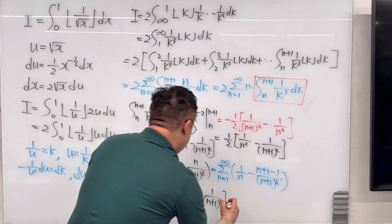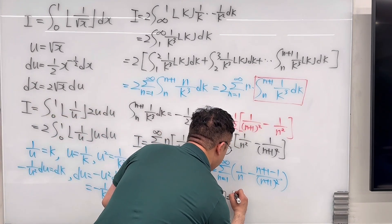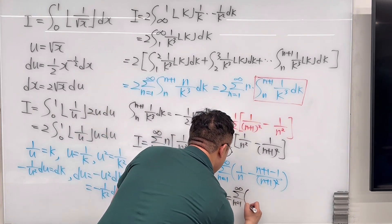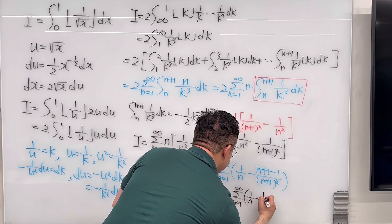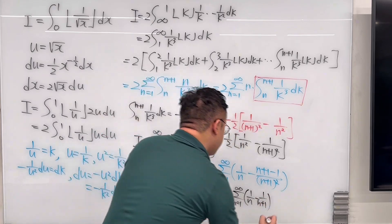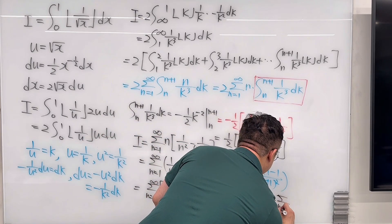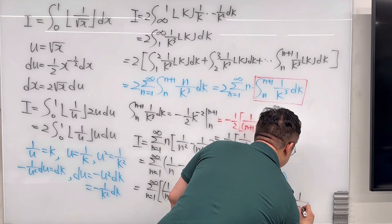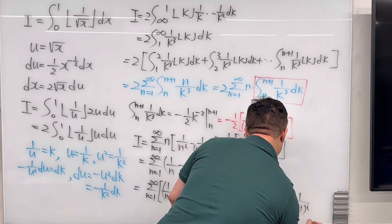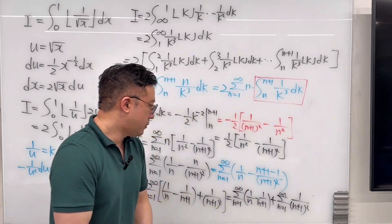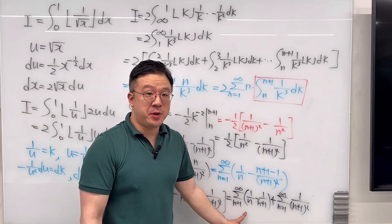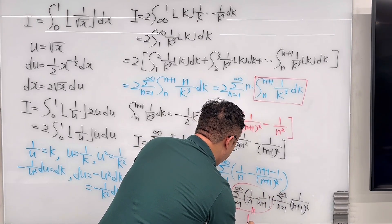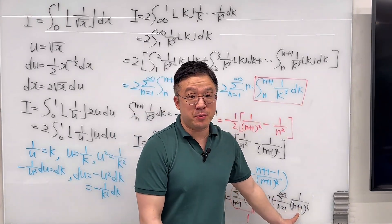We can separate this into two summations: the summation from n equals 1 to infinity of 1 over n minus 1 over (n+1), plus the summation from n equals 1 to infinity of 1 over (n+1) squared. The first summation is a telescoping series and equals 1.